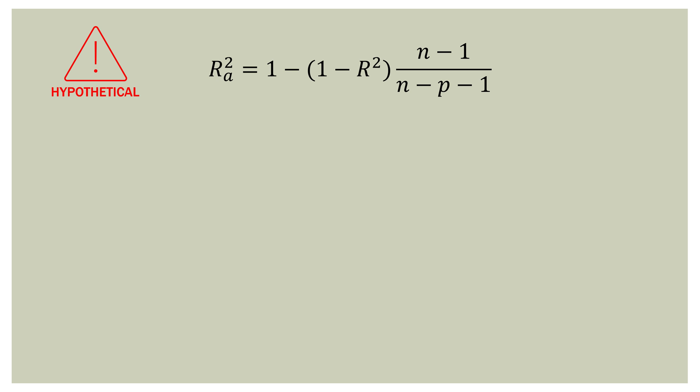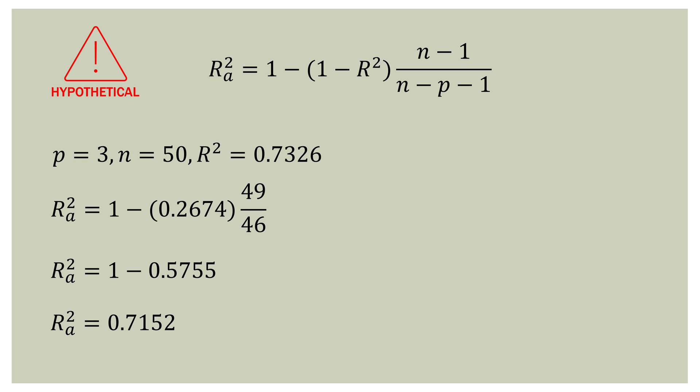Now let's change the number of observations instead. We keep three feature variables, but drop to 50 observations — halving our sample size. The R-square stays the same at 0.7326. Doing the math, we end up with an adjusted R-square of 0.7152. We went from 0.7326 down to 0.7152 — a bigger decrease than before, but not overly drastic.